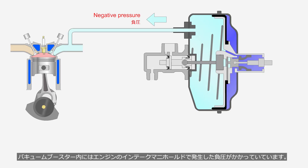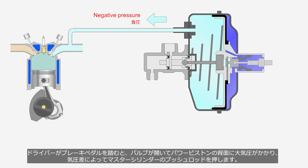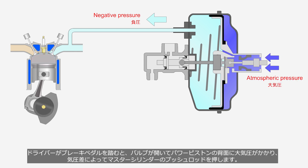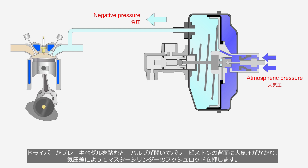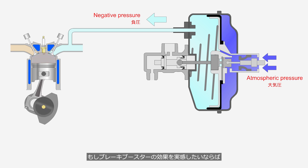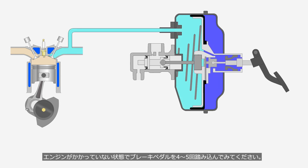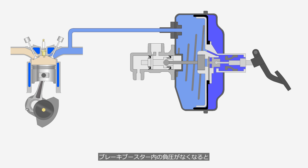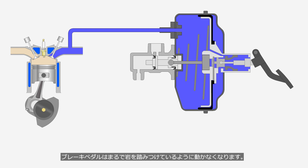Negative pressure generated at the engine's intake manifold is applied inside the vacuum booster. When the driver depresses the brake pedal, a valve opens and atmospheric pressure is applied to the back of the power piston, pushing the push rod of the master cylinder due to the pressure difference. If you want to experience the power of the vacuum booster, try depressing the brake pedal four to five times with the engine off. When the negative pressure inside the vacuum booster is lost, the brake pedal becomes unresponsive, as if you are stepping on a rock. You will be able to understand how much the vacuum booster assists you while driving.